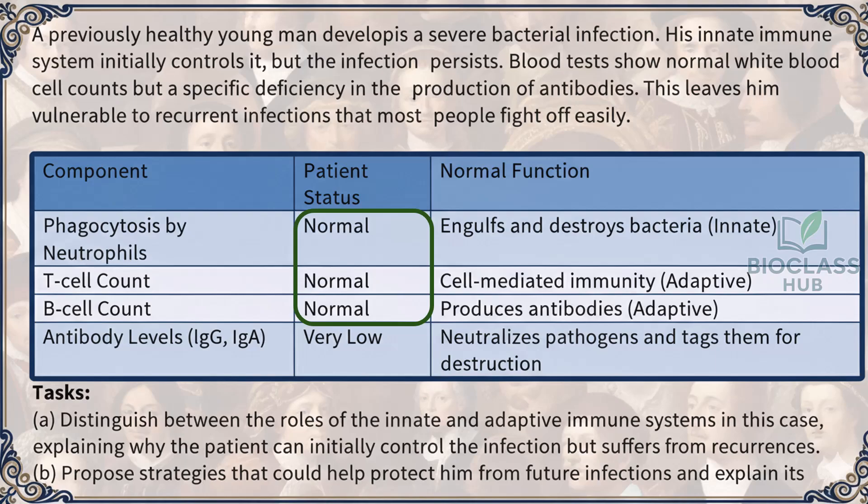Item 4. A previously healthy young man develops a severe bacterial infection. His innate immune system initially controls it, but the infection persists. Blood tests show normal white blood cell counts but a specific deficiency in the production of antibodies, leaving him vulnerable to recurrent infections. Part A: Distinguish between the roles of the innate and adaptive immune systems in this case, explaining why the patient can initially control the infection but suffers from recurrences. Part B: Propose strategies that could help protect him from future infections and explain their mechanism.